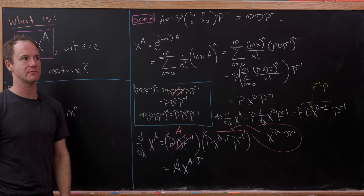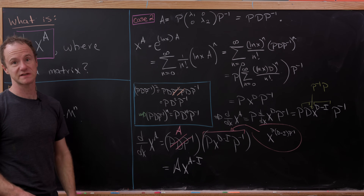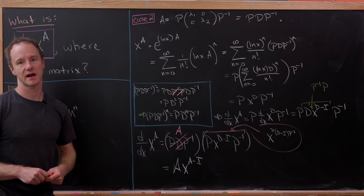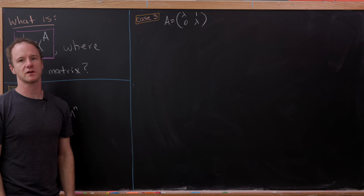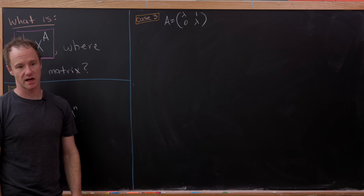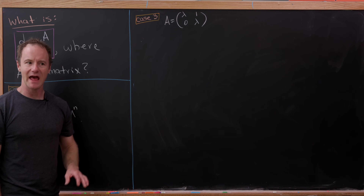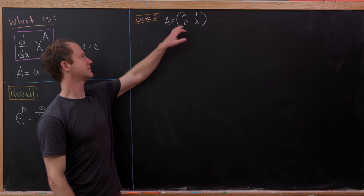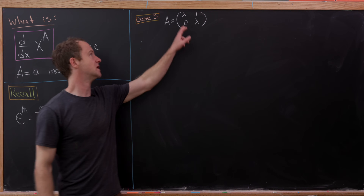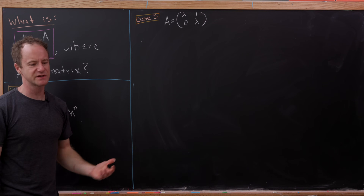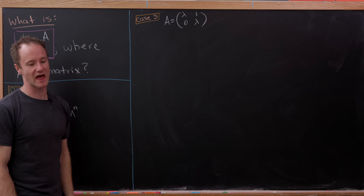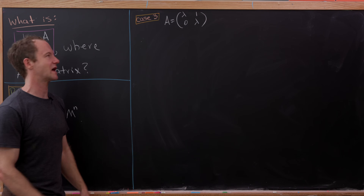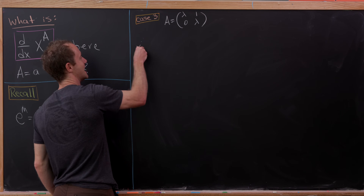That's pretty cool. Now we're going to look at one more example where A is not diagonalizable. Every two-by-two matrix that's not diagonalizable is similar to a Jordan form matrix with λ on the diagonal and 1 in the upper-right entry. So we might as well just consider a matrix of that form.